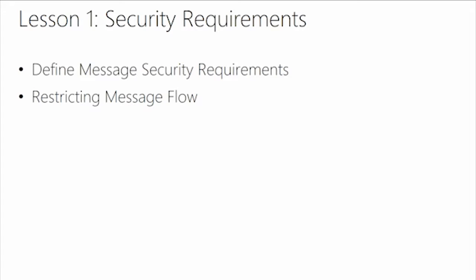The first thing you have to do when you look at your message security requirements is to define what they are. You have to talk to your users and ask whether you really have a need to encrypt messages to all users. By default, Exchange inside of the organization will always encrypt messages — one server sending to another will be encrypted using SMTP TLS encryption. So no eavesdropping can take place inside your Exchange organization. But you may also want to send messages to a partner organization outside your organization, and you want to make sure those messages travel across the internet also encrypted.